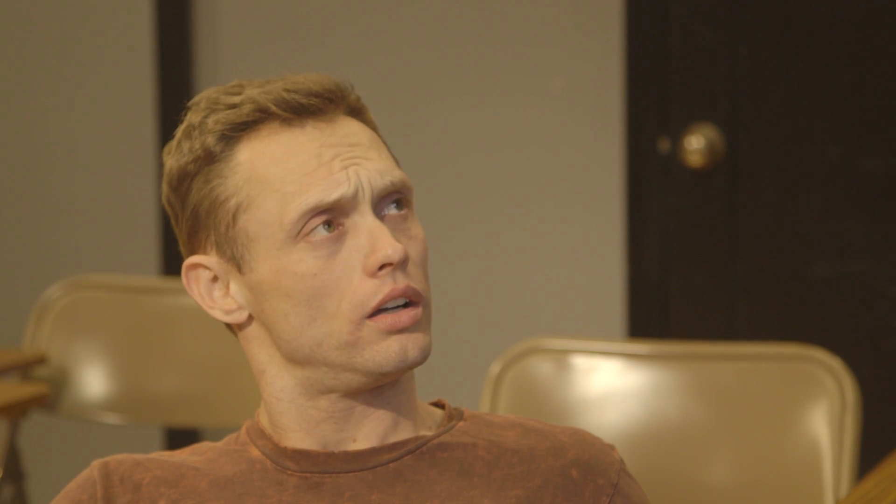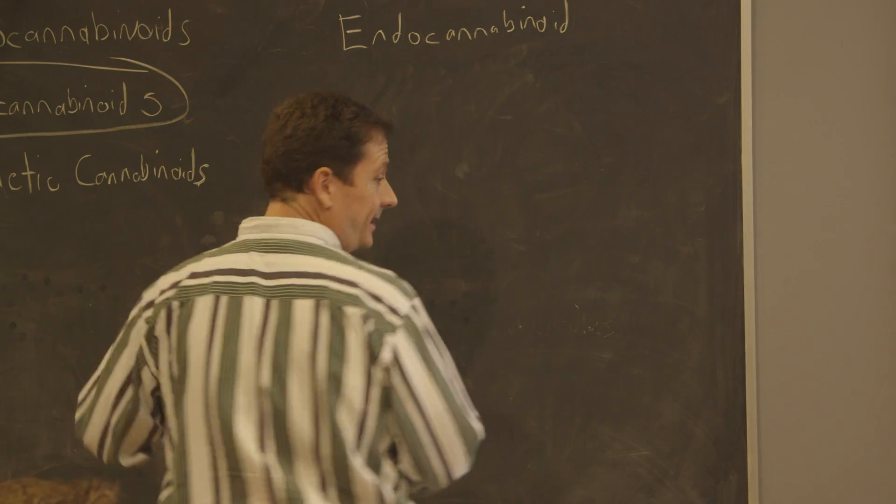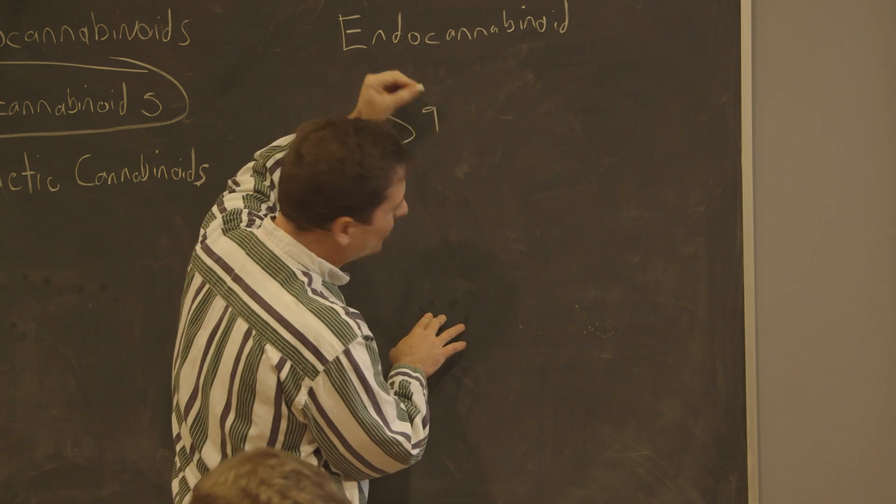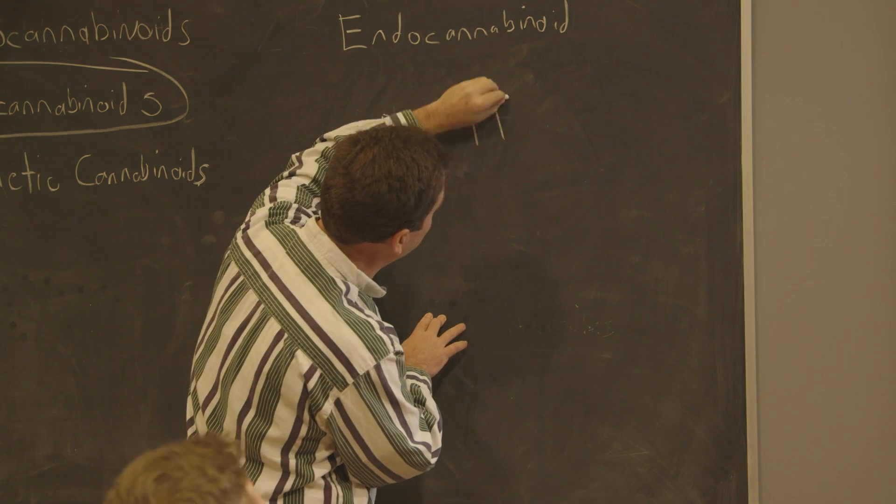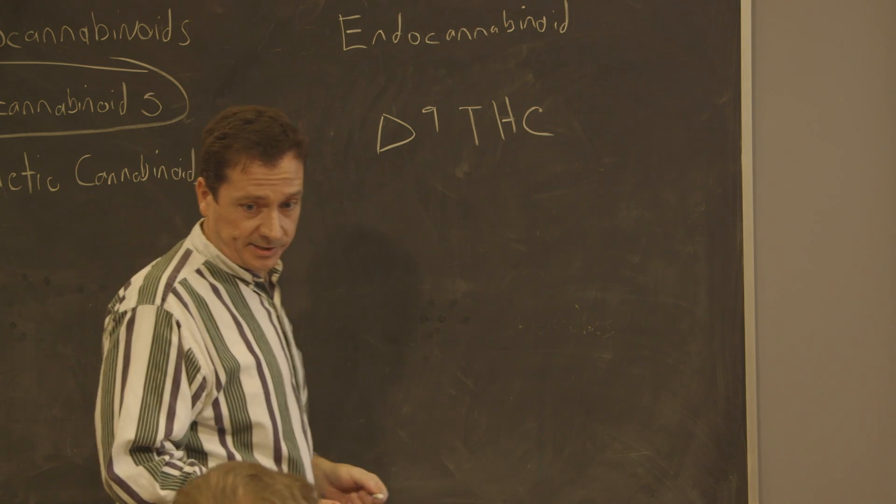Huh? Well, the most prevalent of all the cannabinoids is called delta-9 tetrahydrocannabinol, or THC. Now THC has psychoactive effects. It's listed on the registry of psychotropic substances.